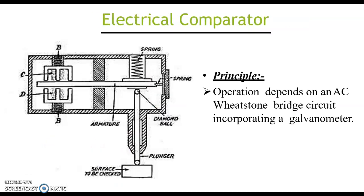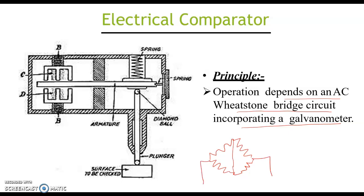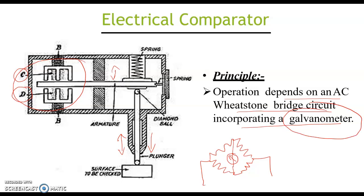In an electrical comparator, the operation depends on an AC Wheatstone bridge circuit incorporating a galvanometer. The Wheatstone bridge is constructed using C and D coils with an armature in between, which is connected to the plunger. Whenever the plunger moves, the armature position changes, varying the current induced in the C and D coils. This variation in current is measured by the galvanometer, whose needle or dial is calibrated to show the displacement.